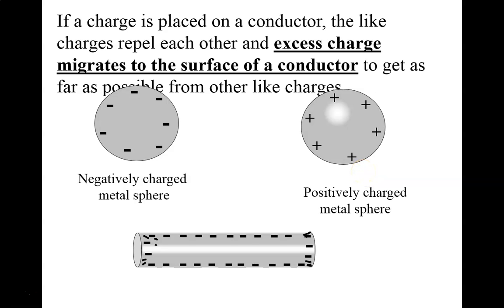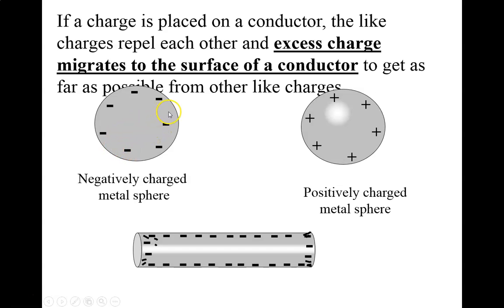When you place charge on a conductor — something like metal — the charge migrates to the outside of the object. If we're talking about a sphere, the charge migrates to the outside of the sphere. It does that to get that extra charge away, because electrons repel electrons — they repel each other and move to the outside. We didn't have protons move, because protons don't move; that would be a nuclear reaction. Some of the electrons migrate to minimize that extra charge and get it as far away as possible.